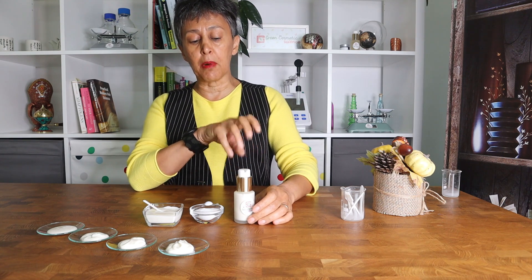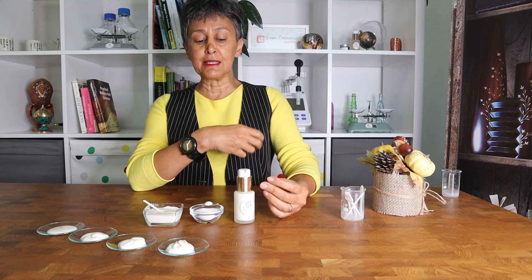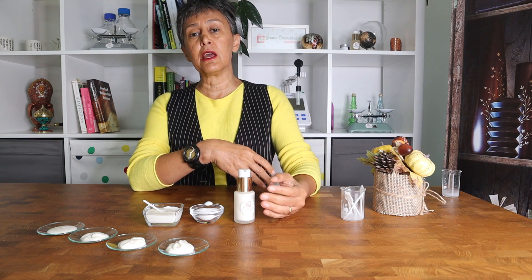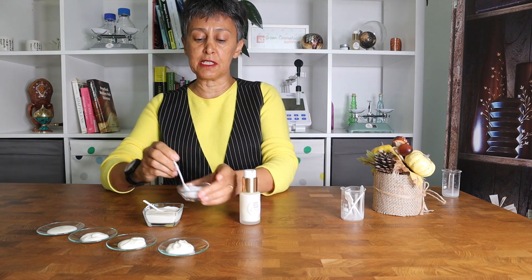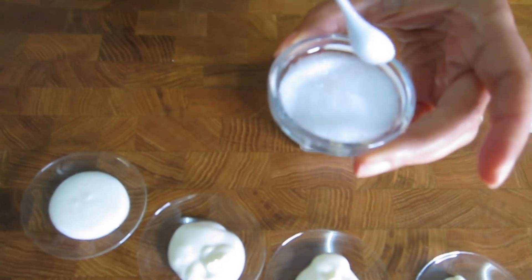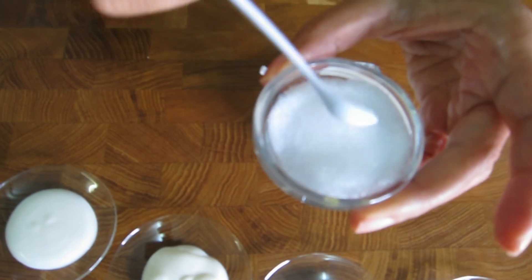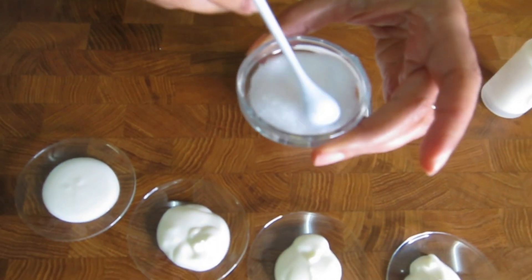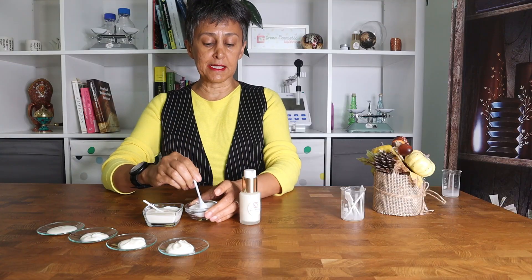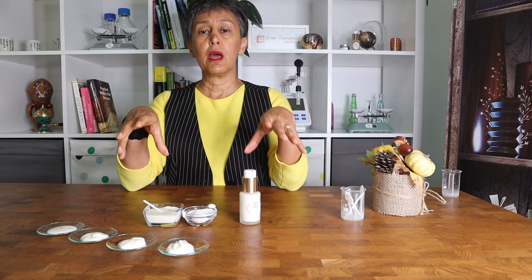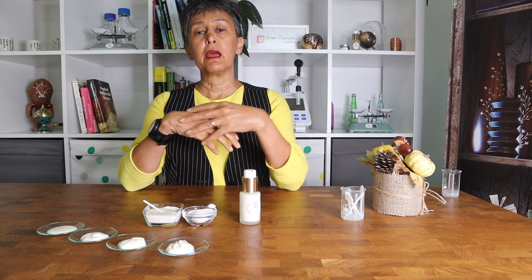With this certain emulsifier, the pH will drop over time and you need to buffer the formulation to avoid a pH drift. We do that by adding simply 0.5% of sodium citrate, which is a white crystalline powder, easily water soluble, to the water phase before we blend the water and the oil phase.